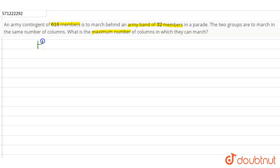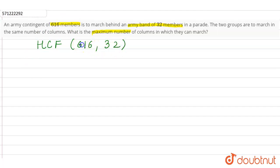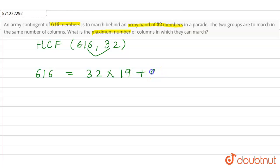To find the highest common factor, we'll use Euclid's algorithm. The two numbers are 616 and 32. We choose the greater number, which is 616, and divide it by 32. 32 into 19 gives us 608, so the remainder is 8. Since the remainder is not equal to 0, we have to further apply Euclid's lemma.